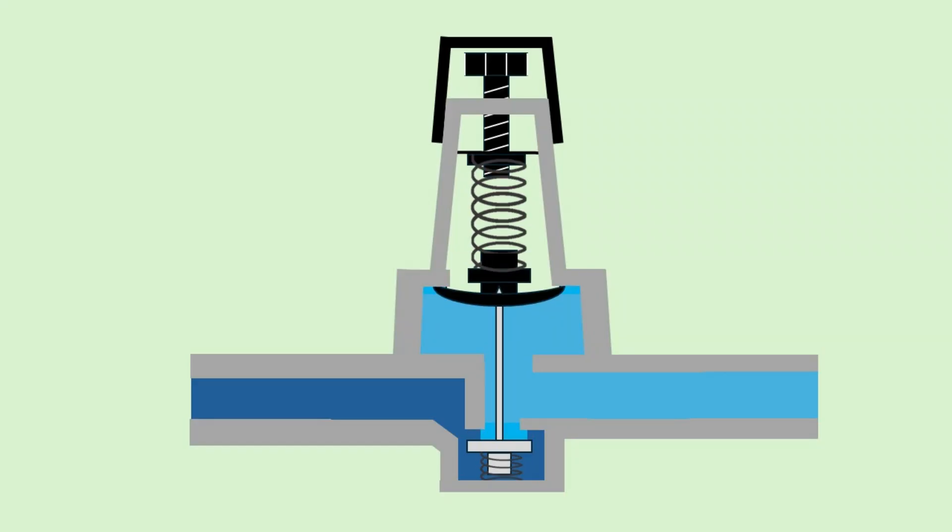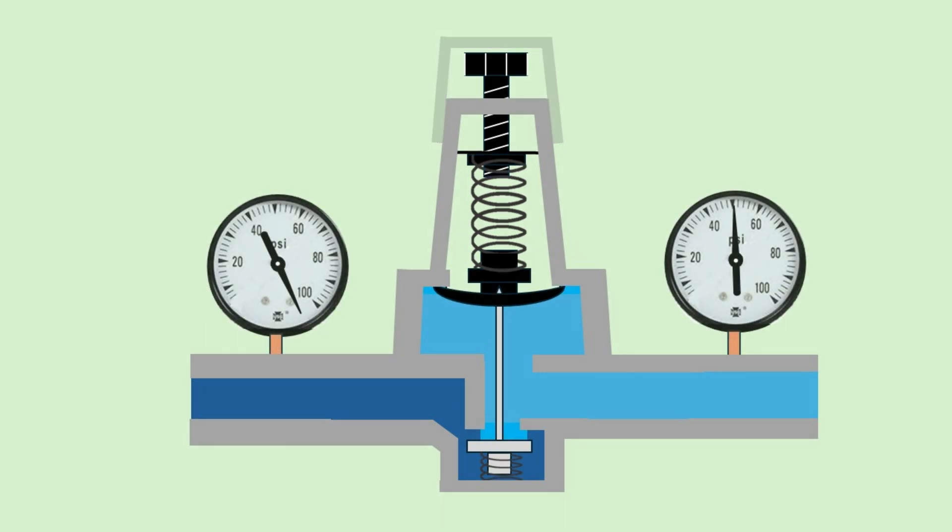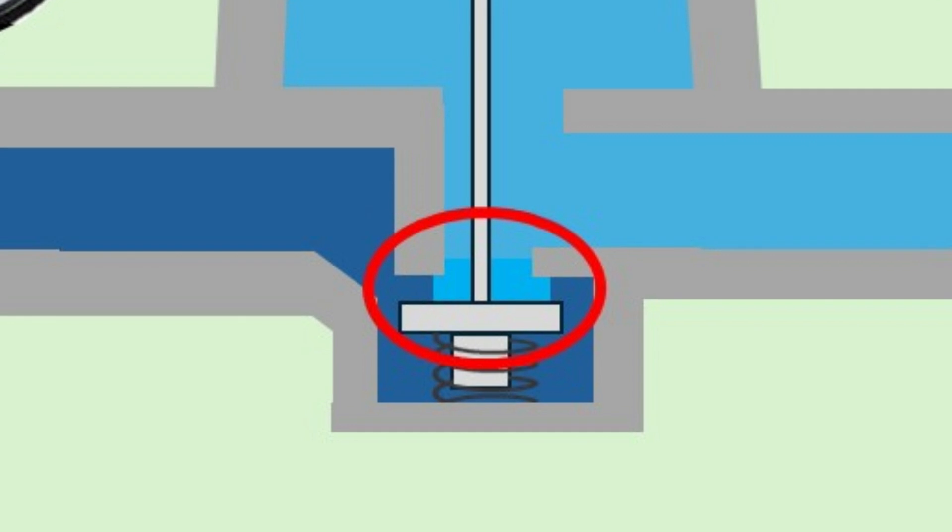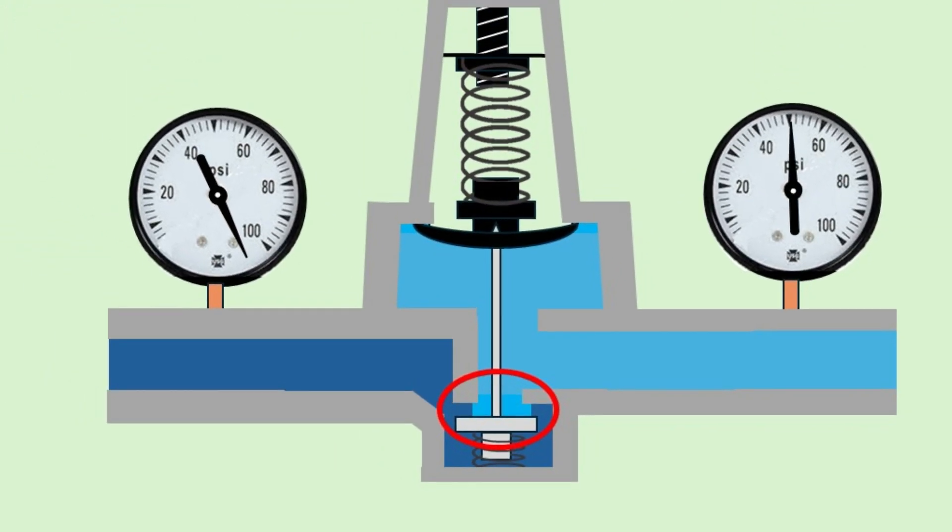Here's a quick look at how the valve operates. As the diaphragm moves, it adjusts the position of the poppet valve, opening or closing the gap to control water flow and regulate pressure. The gap between the poppet valve and its seat is where the pressure reduction happens. As water flows through this restricted opening, the pressure drops.